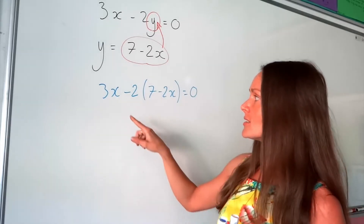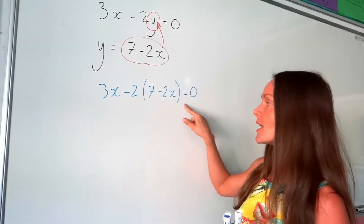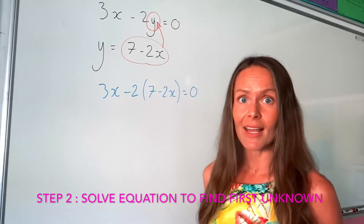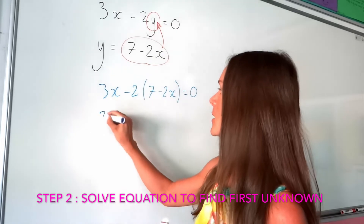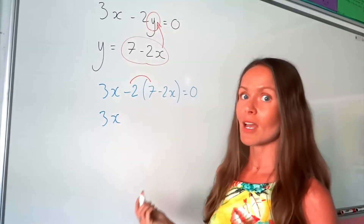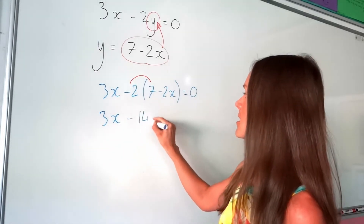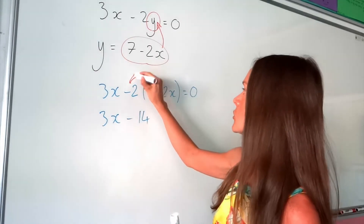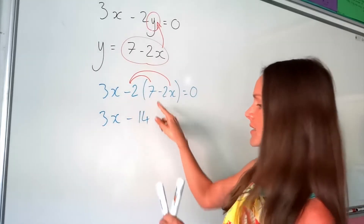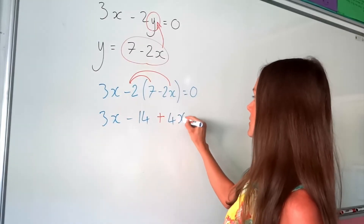Now, as you can see here, we've got an equation that only has x as the unknown, so we can solve this linear equation to calculate x. So I'm going to expand the brackets in this equation. I've got negative 2 times 7, which is just negative 14. Then I've got negative 2 times negative 2x — so be careful, we've got a negative times a negative, which gives me a positive.